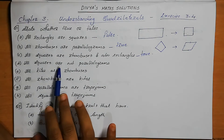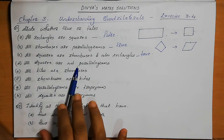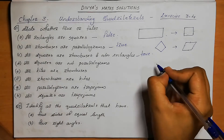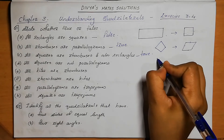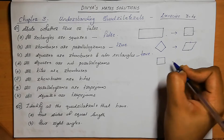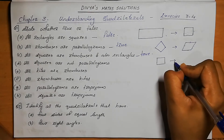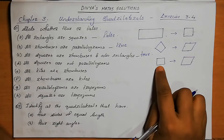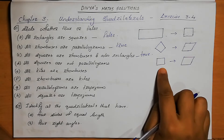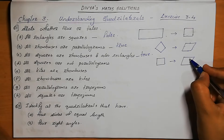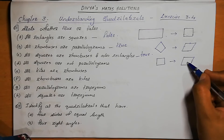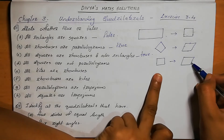Next: all squares are NOT parallelograms. What is the condition of a square? All four sides are equal. What about a parallelogram? Opposite sides are equal. So the square condition is satisfied in the parallelogram.